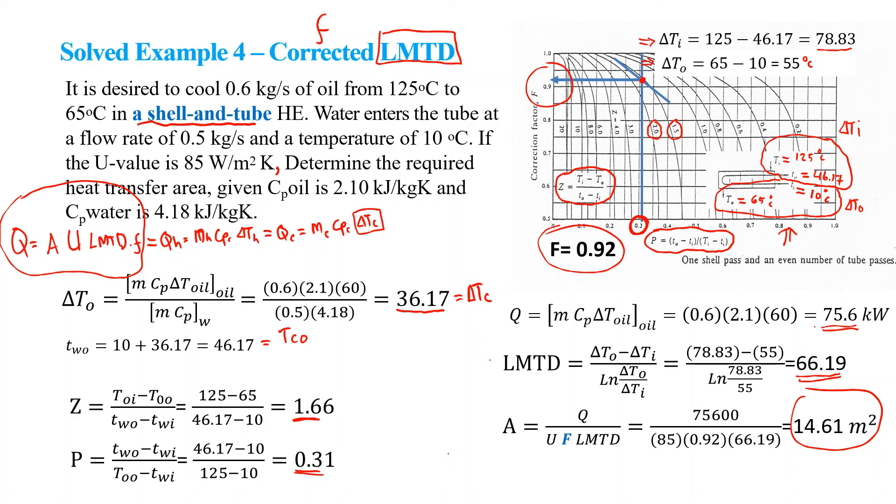Now you can compare this shell-and-tube heat exchanger to the double pipe heat exchanger with the same configuration in counter flow. You notice that the area required is slightly higher because it is less efficient. In the case of double pipe heat exchanger, if you put it in the chart, the value of F equals 1.